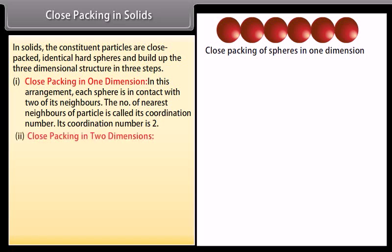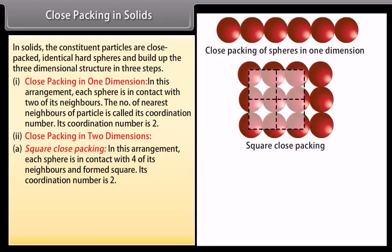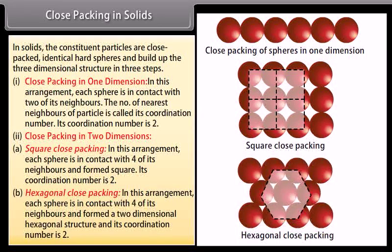Step 2: Close packing in 2 dimensions. A. Square close packing: each sphere is in contact with 4 of its neighbours, forming a square arrangement; its coordination number is 4. B. Hexagonal close packing: each sphere is in contact with 6 of its neighbours, forming a 2-dimensional hexagonal structure; its coordination number is 6.